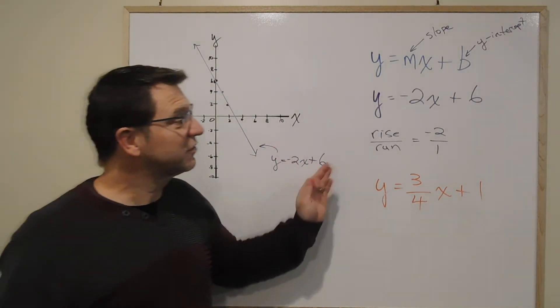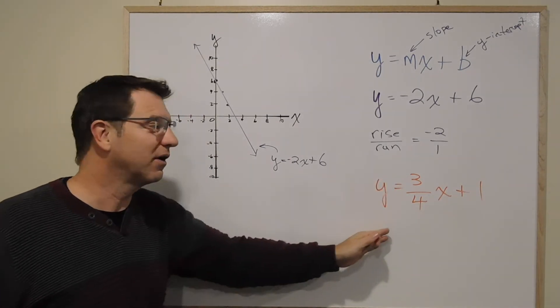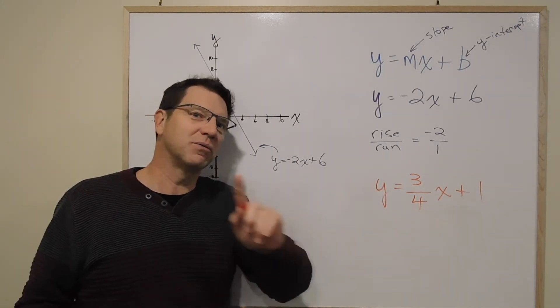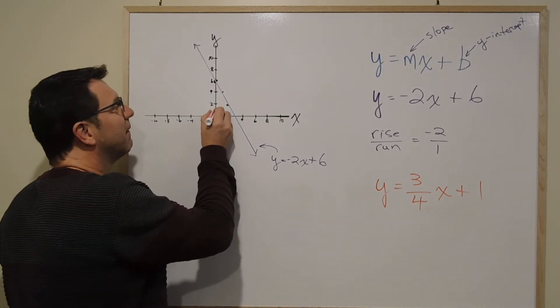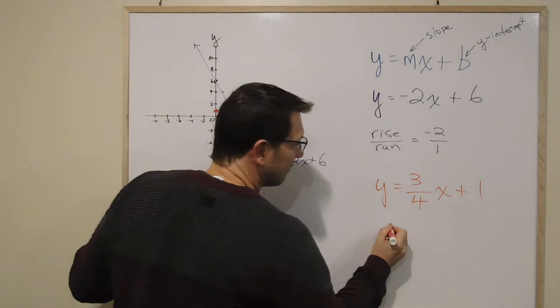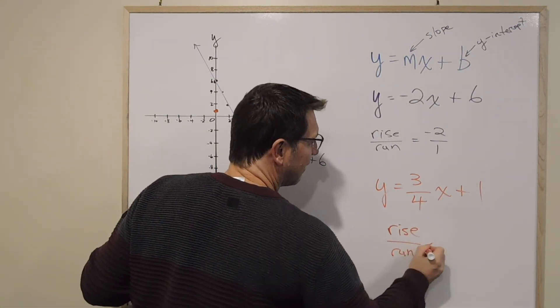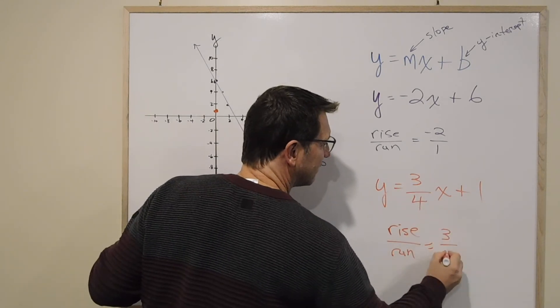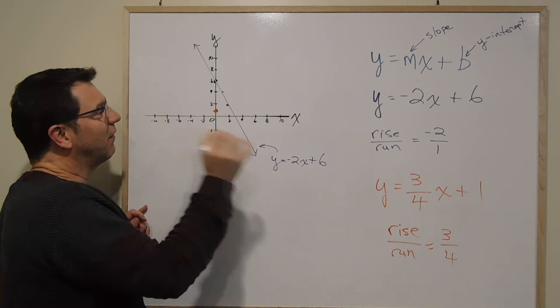And again, it's slope intercept form. We can see our slope, which is already a fraction, 3 over 4. And our y intercept is 1. So our y intercept, we start with at 1. And we literally count, right? Rise over run is very straightforward because we have a fraction. It's 3 over 4. So we go up 3 and over 4.